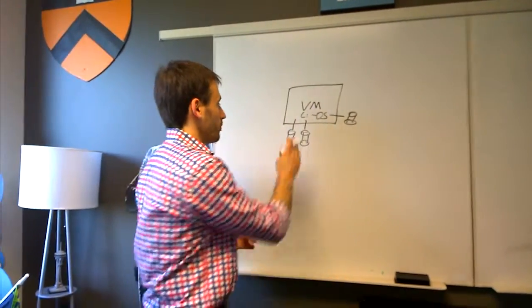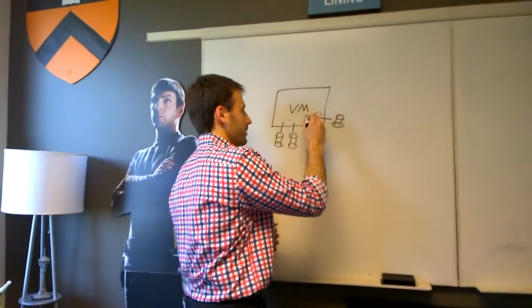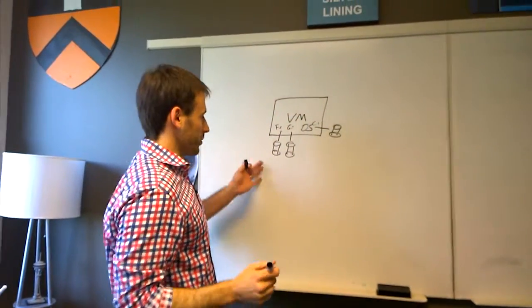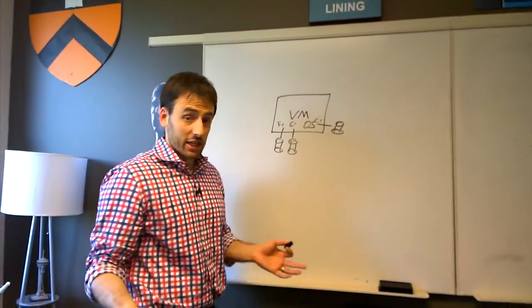Let me draw that a little bit better here. Your C drive over here. And then this may be F or G, whatever it may be. And so these data disks, and of course, all of this is sitting in storage.